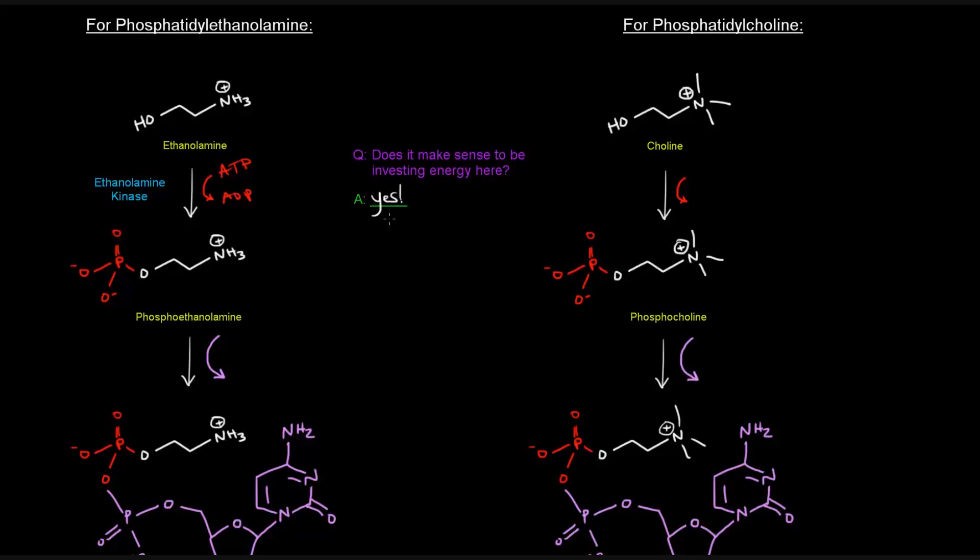So, I'm going to show you how to make phosphatidylethanolamine and phosphatidylcholine, and hopefully you can apply what we learned here to try to do phosphatidylserine on your own. We've got ethanolamine kinase, a kinase that adds a phosphate to ethanolamine to give us this new molecule, which is just ethanolamine with a phosphate group on the end. So, that's going to be phosphoethanolamine.